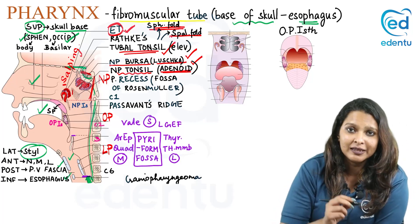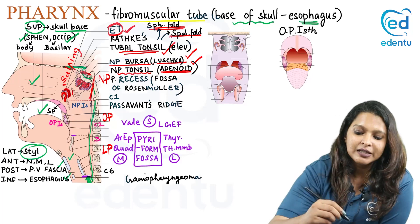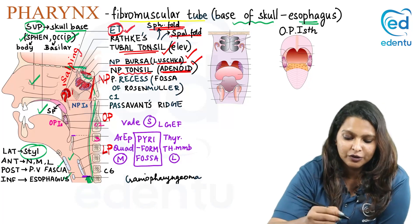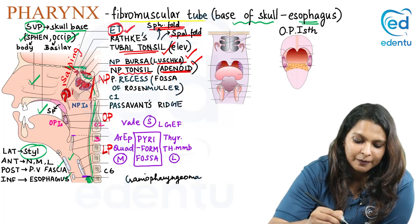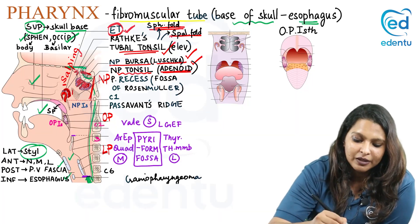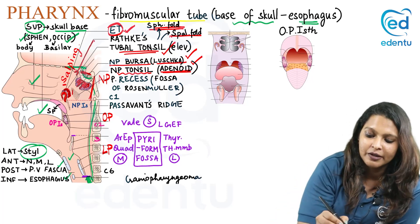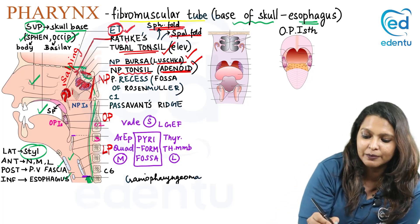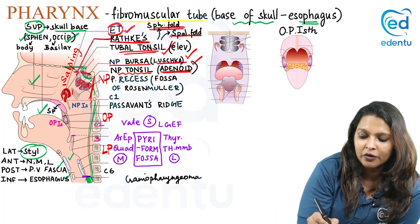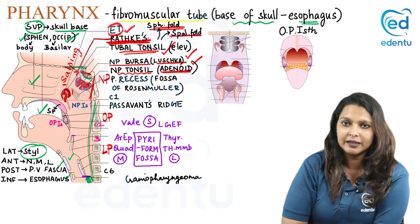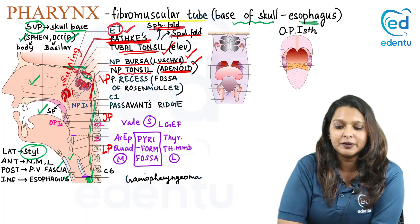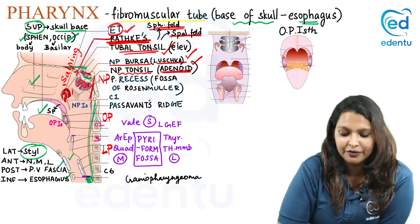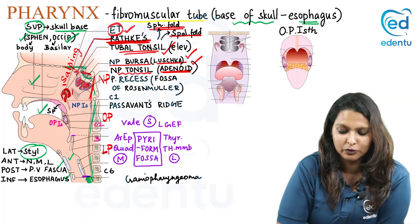Just above the nasopharyngeal tonsil you will see a dimple-like structure. This is because of the persistence of Rathke's pouch. This can also be asked in an MCQ — the dimple is due to the persistence of Rathke's pouch.